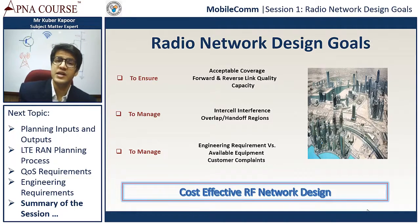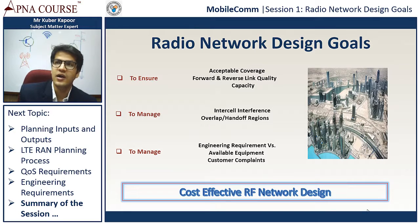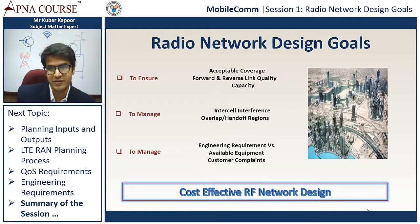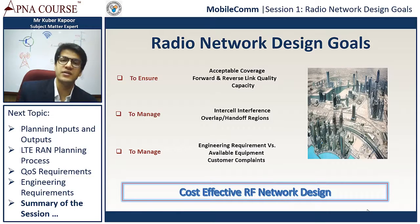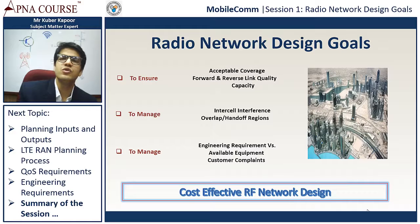Another goal is to manage intercell interference. In LTE we use frequency reuse 1, meaning the same frequency is deployed across all cells, which creates interference especially at the cell edge. We can reduce intercell interference by down-tilting antennas between cells to reduce the overlap region, or by adjusting antenna height. Another method is ICIC — intercell interference coordination — which restricts the Node B from scheduling heavily interfered PRBs.